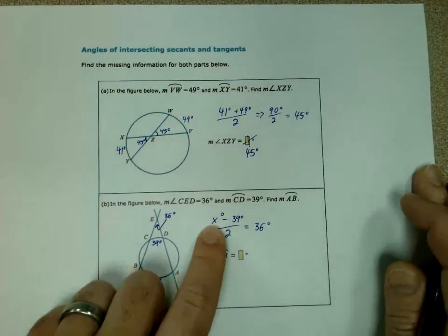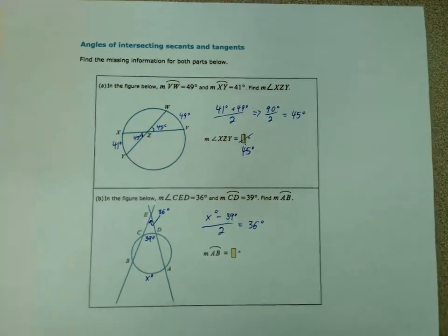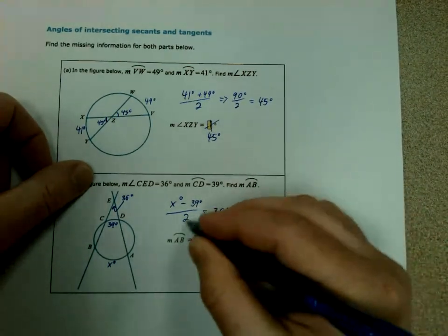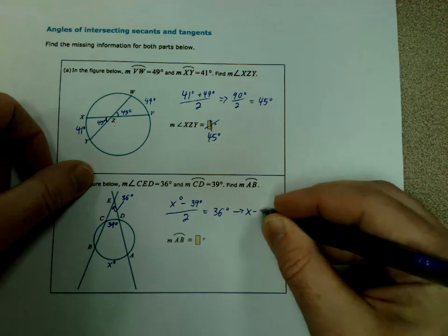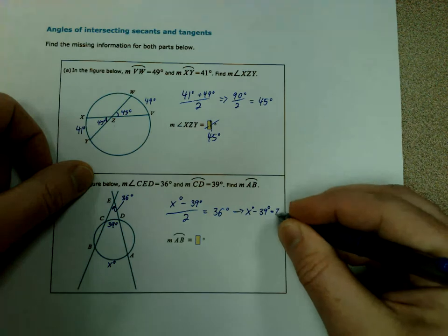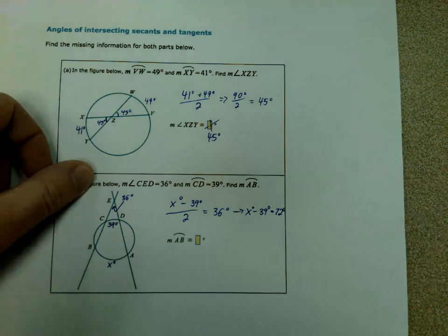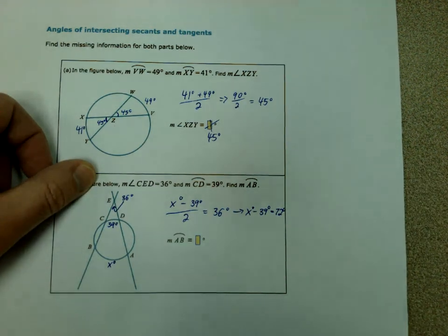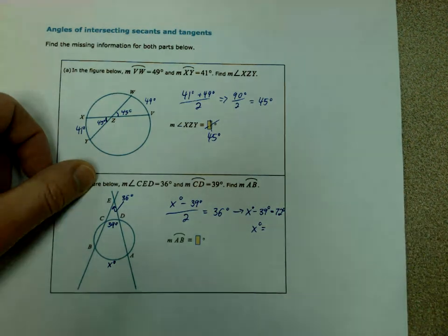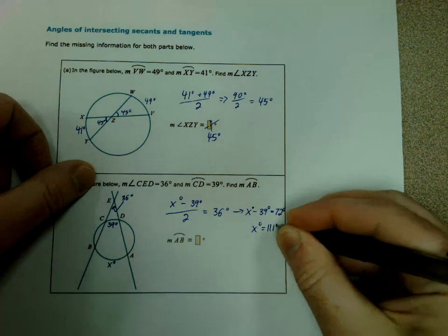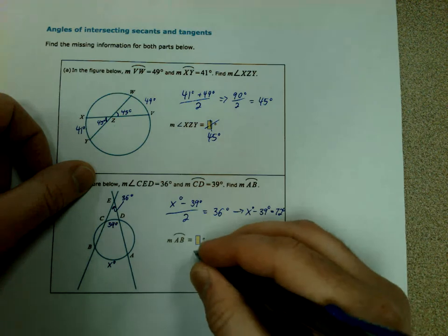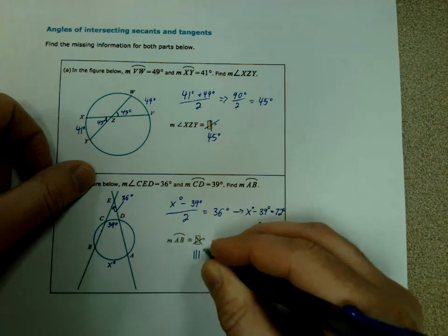So now since the x is over here, it's a little bit trickier, but it's still not too bad. So what I'm going to do is multiply both sides by 2, and have x minus 39 equals 2 times 36, so it equals 72 degrees. Then we just need to add that 39 over. So 72 plus 39 gives us 111 degrees. So in this case, the measure of arc AB is 111 degrees.